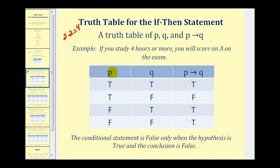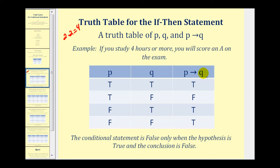We'll start by listing P as true, true, false, false. Then Q can be true or false when P is true, and Q can be true or false when P is false. So we have four possibilities to consider when looking at if P then Q.